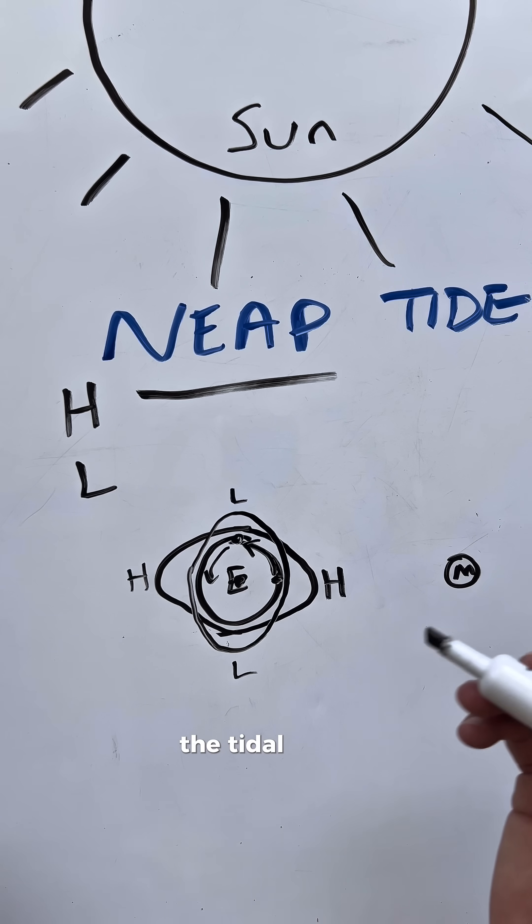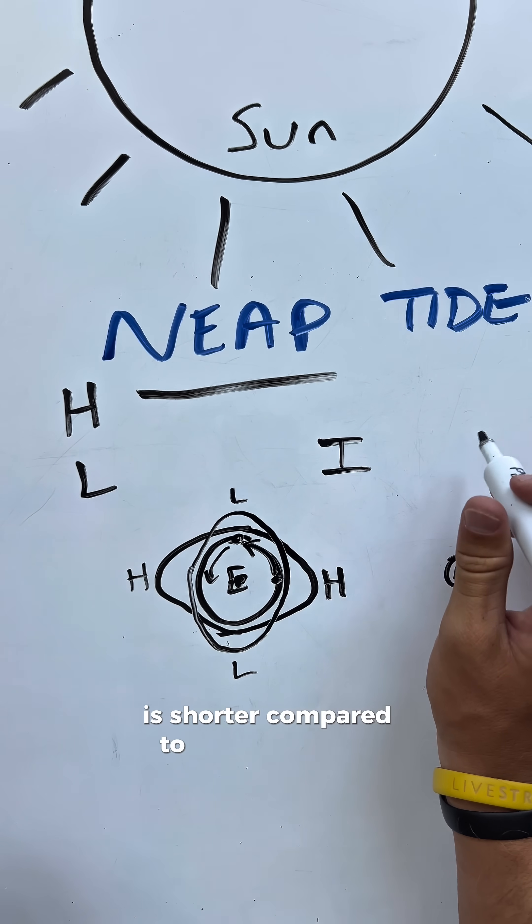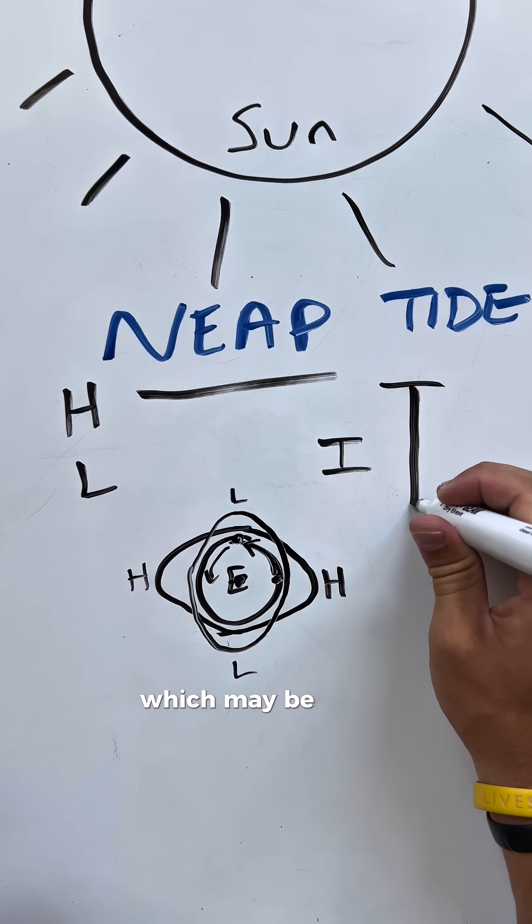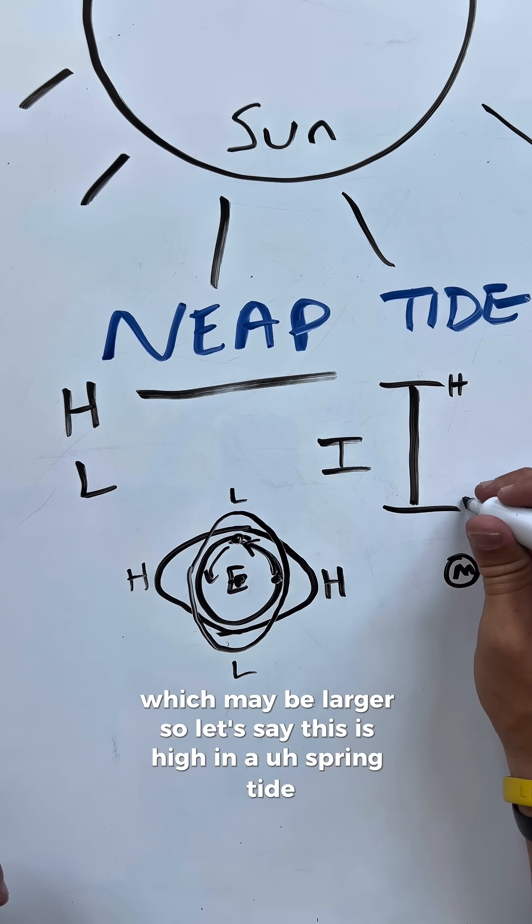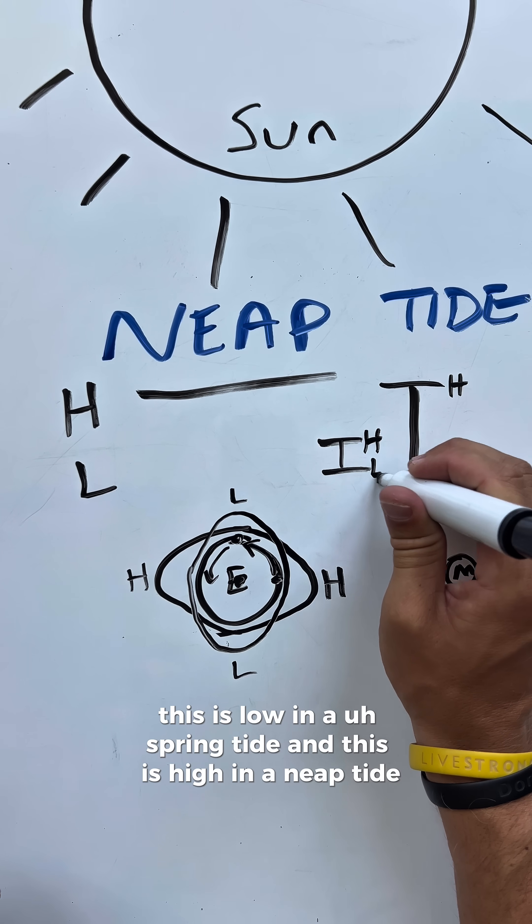So that means the tidal range is shorter compared to the tidal range with a spring tide, which may be larger. So let's say this is high in a spring tide, this is low in a spring tide, and this is high in a neap tide, low in a neap tide.